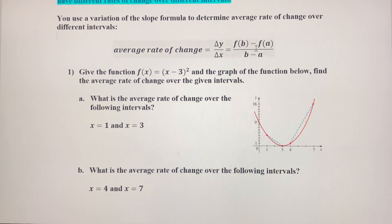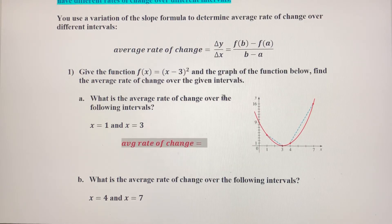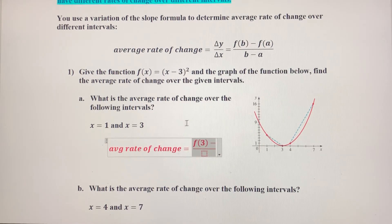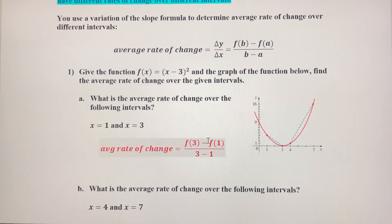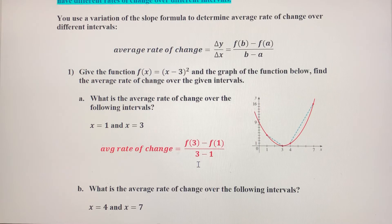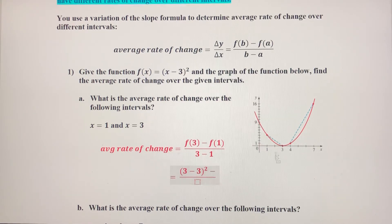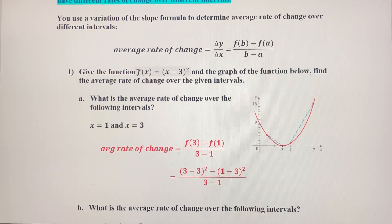We're going to plug these values into our average rate of change formula and determine the average rate of change from 1 to 3. The average rate of change is going to be f(3) minus f(1) over 3 minus 1. Just like with slope, the order in the numerator and denominator doesn't really matter as long as you're consistent. So I'm going to start with 3 in the numerator and start with 3 in the denominator. f(3) means plugging 3 into the function, and f(1) means plugging 1 into the function.